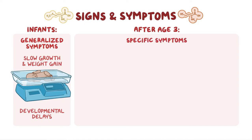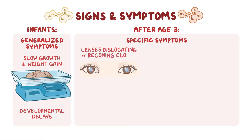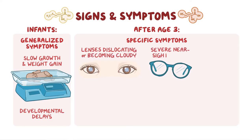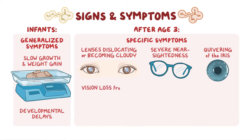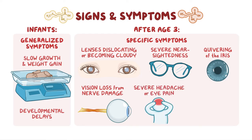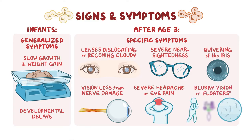Symptoms in the eyes may include the lenses of the eye dislocating or becoming cloudy, severe nearsightedness, and quivering of the iris. Symptoms may include vision loss from damage to the primary nerve that sends signals from the eye to the brain, severe headache or eye pain from increased pressure in the back of the eye, and blurry vision or floaters from retinal damage.